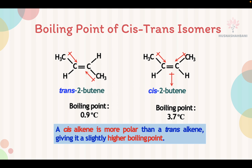For cis-trans isomers, look at the boiling point. The trans-2-butene boiling point is lower than the cis-2-butene boiling point. Cis-alkene is more polar than a trans-alkene. If you look at this polarity, the CCH3-CCH3 trans configuration — they can cancel out each other, but not for cis.